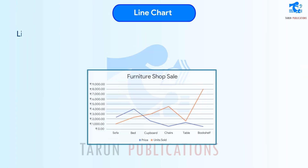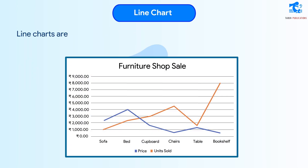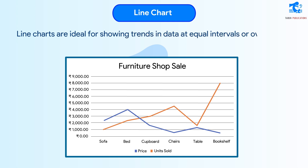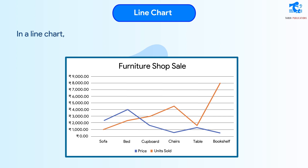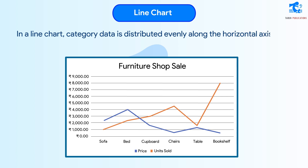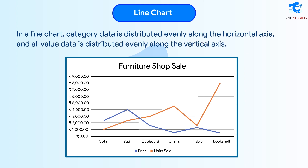Line Chart: Line charts are ideal for showing trends in data at equal intervals or over time. In a line chart, category data is distributed evenly along the horizontal axis, and all value data is distributed evenly along the vertical axis.